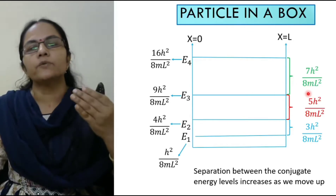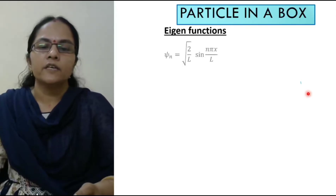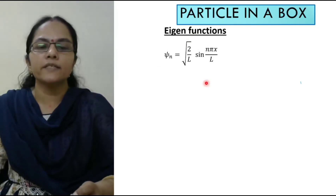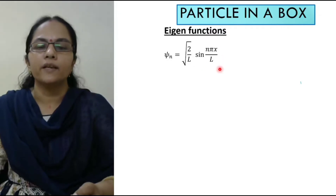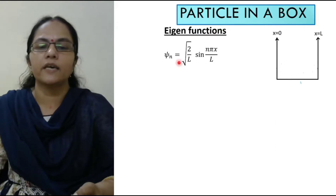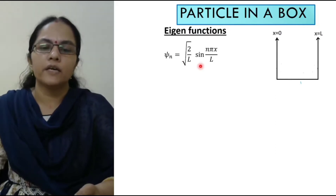Now coming to the eigenfunctions. The general formula obtained in our last class is ψn equals square root of 2 by L times sin(nπx/L). We will now calculate these eigenfunctions for different values of n.